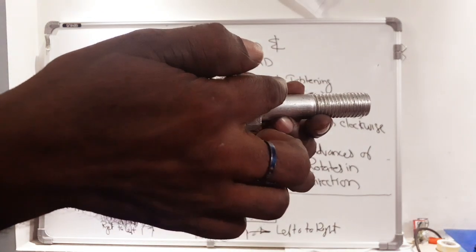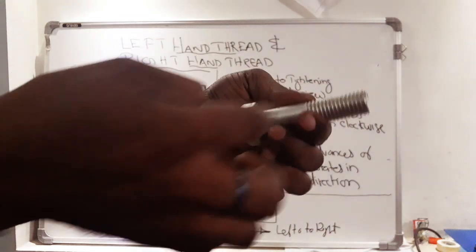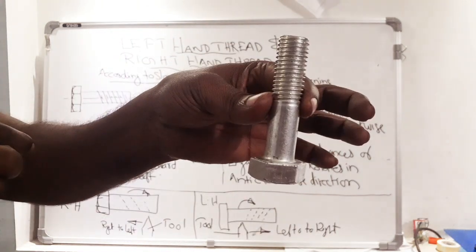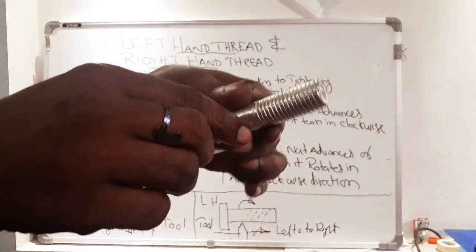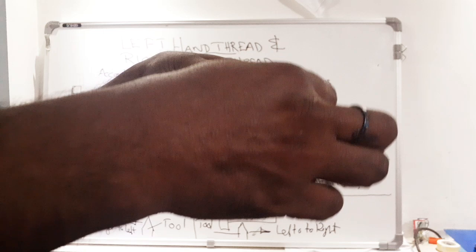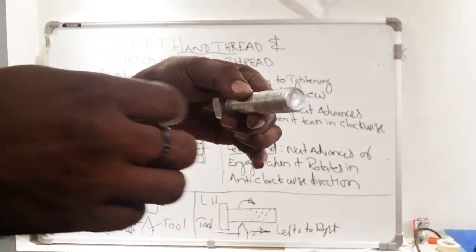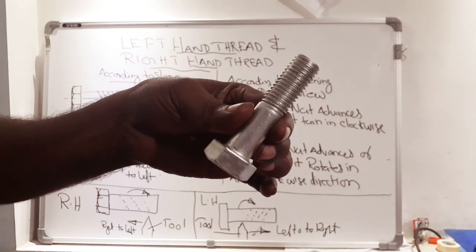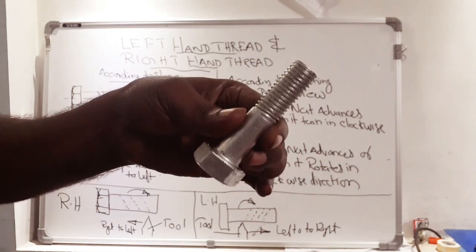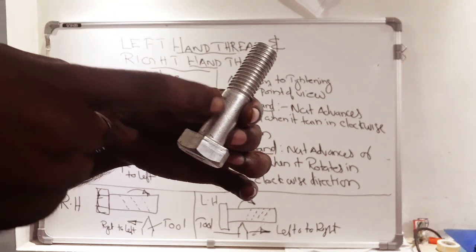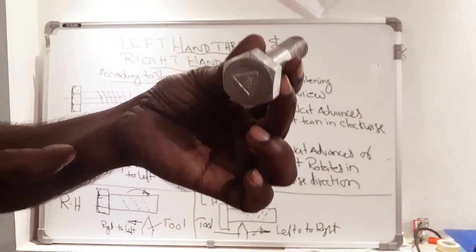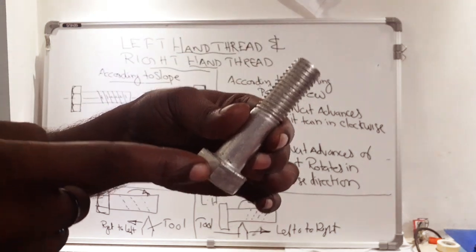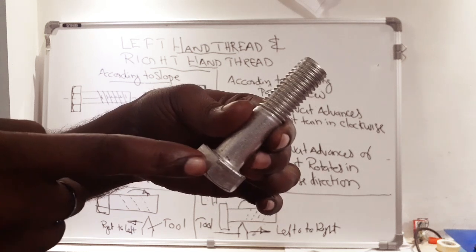A bolt is a device having a head on one end and a threaded surface on the other end. Thread is provided externally, meaning the threaded surface is provided on the outside. Such a component is called an external thread. A bolt is an example of external thread.